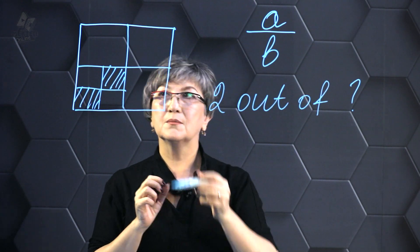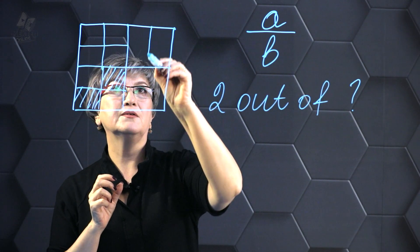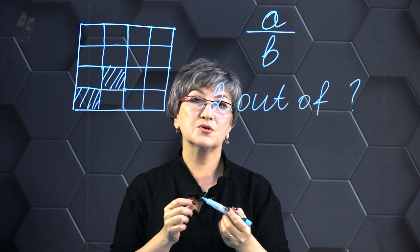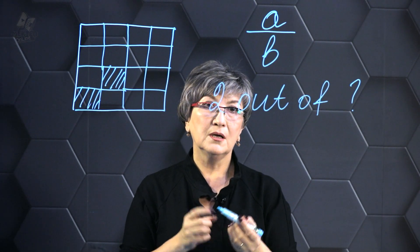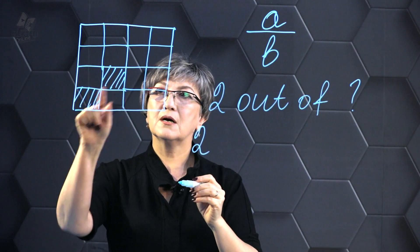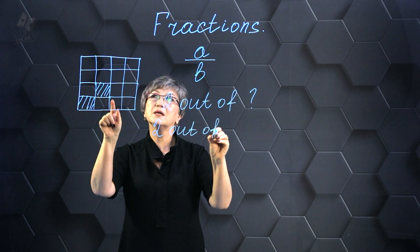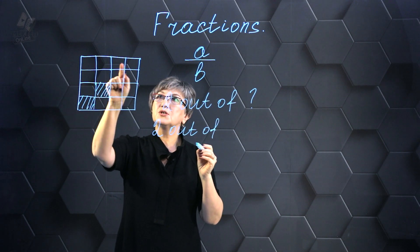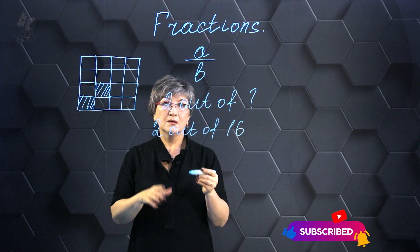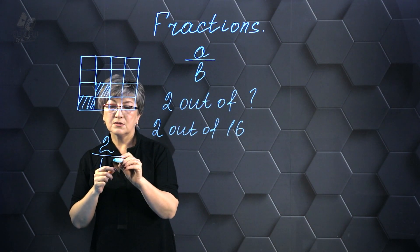Our plan of action is to divide the larger squares into equal parts to ensure fairness and accuracy. Only then can we write the fraction correctly. Let's calculate the number of shaded parts out of the total number of equal parts. We get 16 total parts, and so we can write the fraction: 2 out of 16.